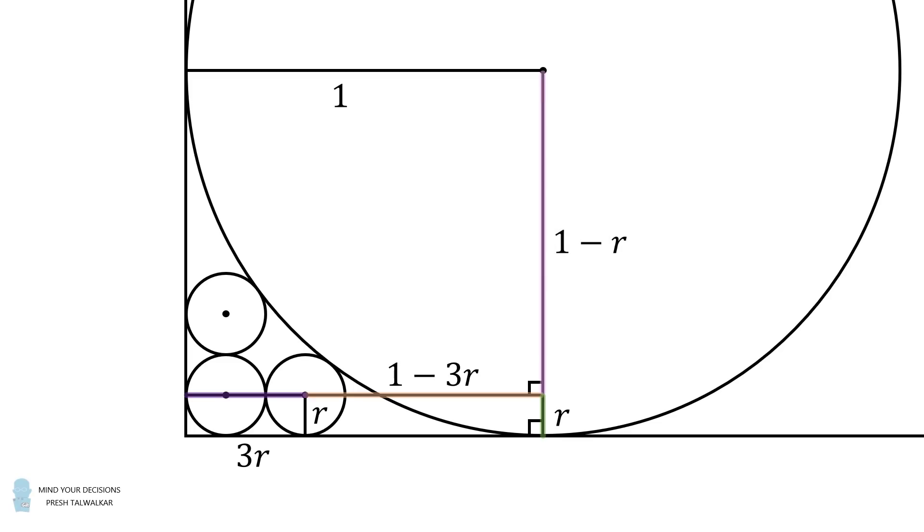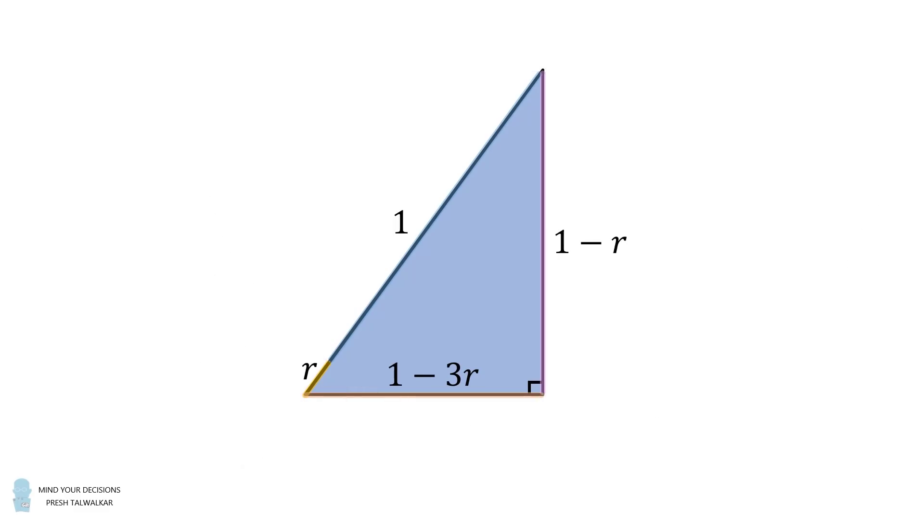From here, connect the center of the large circle to the center of the third circle. One length will be equal to 1, and the other length will be equal to r. We can now focus on the following right triangle. We know the length of each of its sides. One leg is equal to 1 minus r, the other leg is equal to 1 minus 3r, and the hypotenuse is equal to 1 plus r.